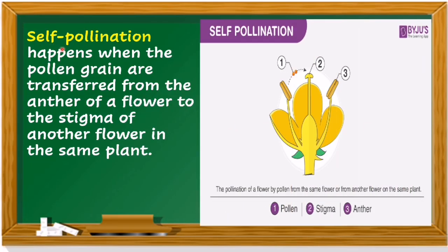Self-pollination happens when the pollen grains are transferred from the anther of a flower to the stigma of the same or another flower on the same plant. In the diagram, number one is the pollen, number two is the stigma, and number three is the anther. This is the pollination of a flower by pollen from the same flower or from another flower on the same plant.